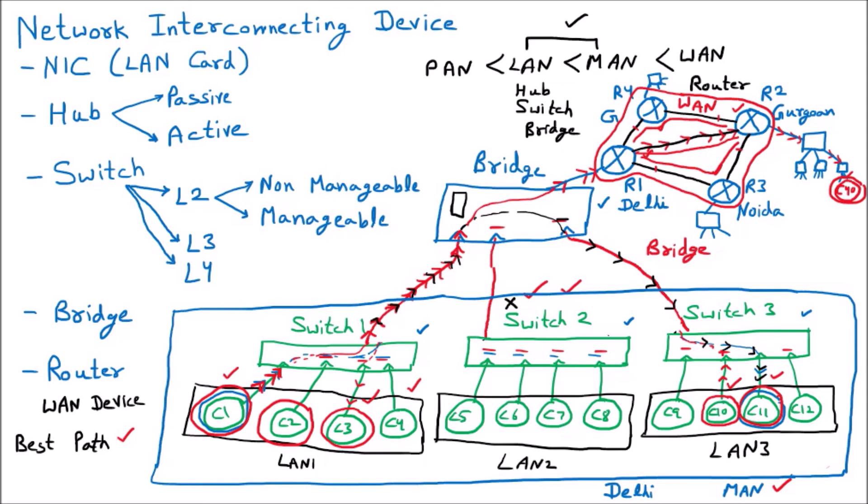There are multiple types of routing — static routing and dynamic routing — and multiple principles of routing as well. The key takeaway is that the router is the WAN device and it is used to select the best route for data transmission.